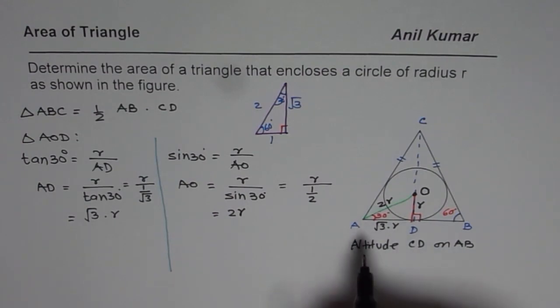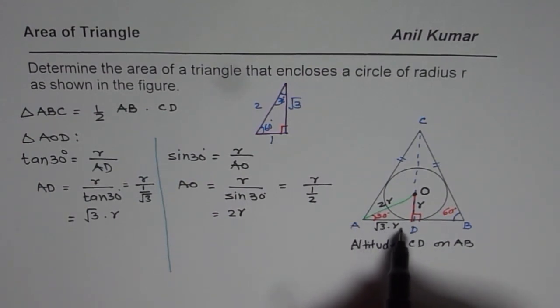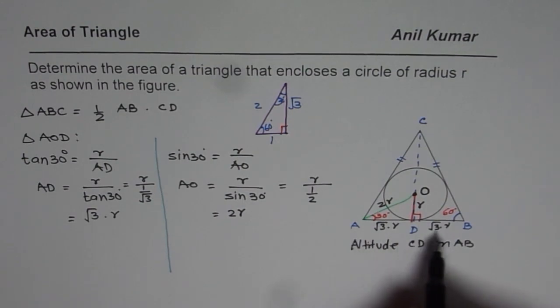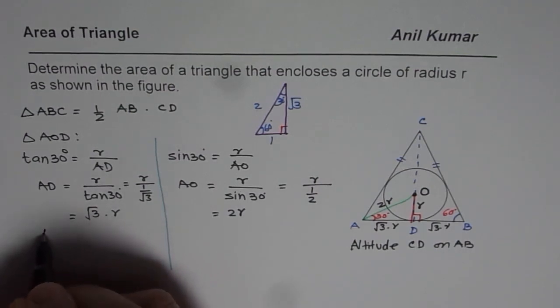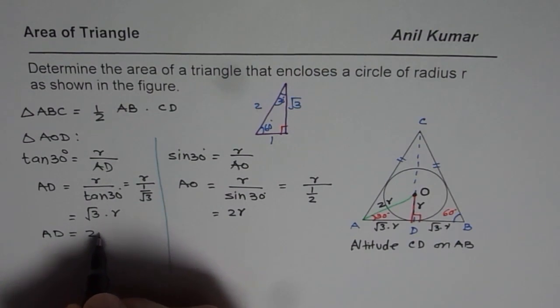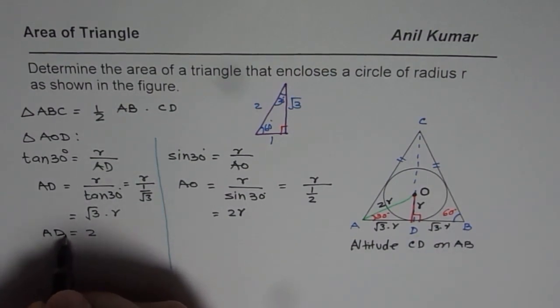And AD is square root 3 times R. So if AD is square root 3 times R, DB is also square root 3 times R. So from here we know what is AD equals to. We know AD, AB. AB is 2 times AD.